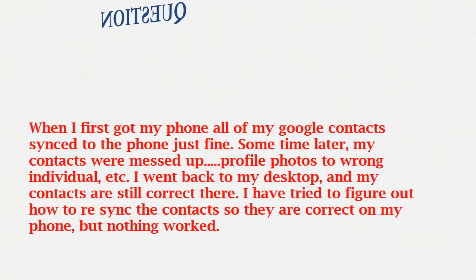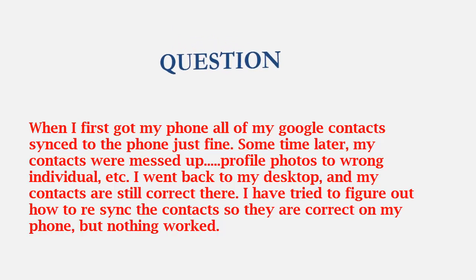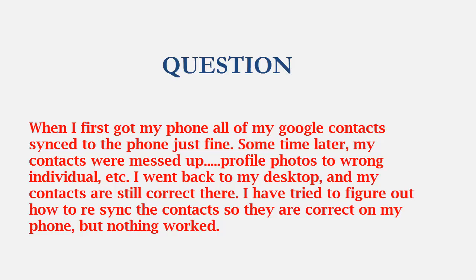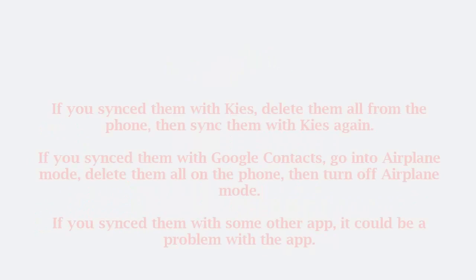The question: when I first got my phone, all of my Google contacts synced to the phone just fine. Some time later, my contacts were messed up — photos assigned to the wrong individual, etc. I went back to my desktop and my contacts are still correct there. I tried to figure out how to re-sync the contacts so they are correct on my phone, but nothing worked.